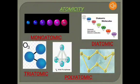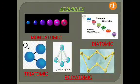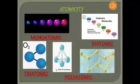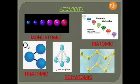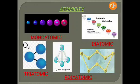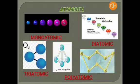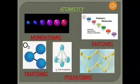Now we have to explain the term atomicity. Atomicity is the number of atoms present in a molecule of an element. It can be classified into monoatomic molecules — a molecule of an element composed of only one atom is known as a monoatomic molecule. Examples include helium, neon, argon, krypton, and xenon.